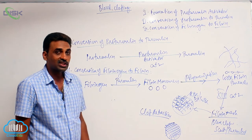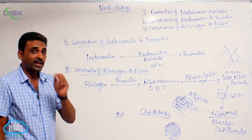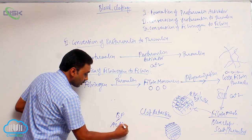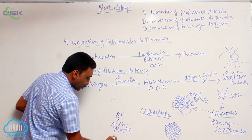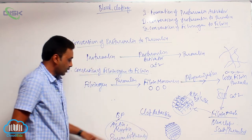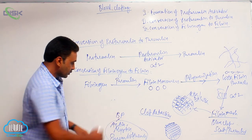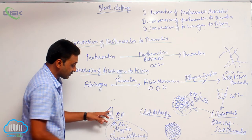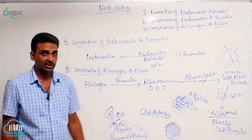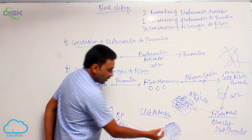Clot retraction is initiated by blood platelets. Certain proteins present inside the blood platelets — actin, myosin, and thrombosthenin — bring about clot retraction.